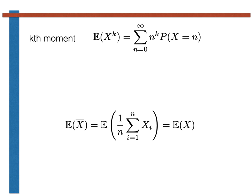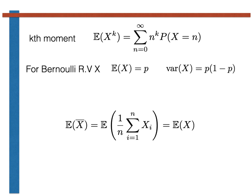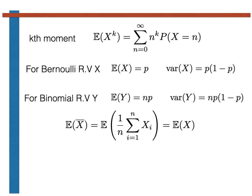For example, we have seen that the expectation and variance of a Bernoulli random variable are p and p times (1 minus p). These are functions of the Bernoulli random variable's parameter, p. Similarly, the expectation and variance for a binomial random variable are np and np times (1 minus p), which are again simple functions of the two parameters of this distribution, n and p.